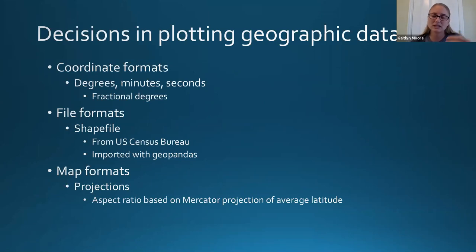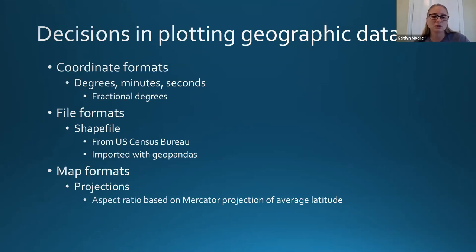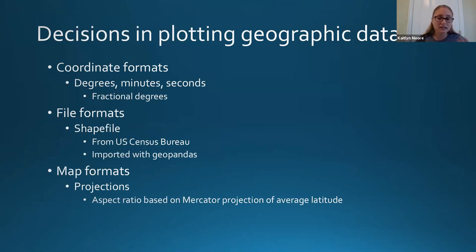I'm representing coordinates in fractional degrees — latitude and longitude as fractional degrees rather than minutes or seconds. I'm using shapefiles from the US Census Bureau and importing those with GeoPandas as my map backgrounds. I'm using a rough projection based on the average latitude of the plots. For the Boise area maps, there's actually relatively little distortion compared to what you'd normally see.